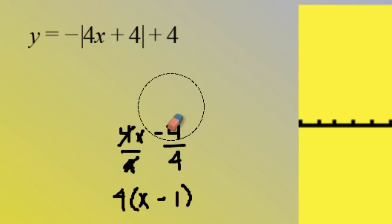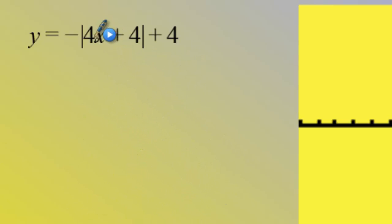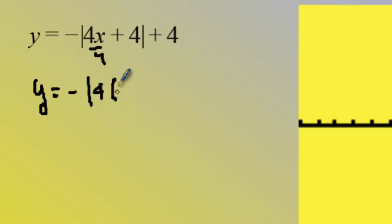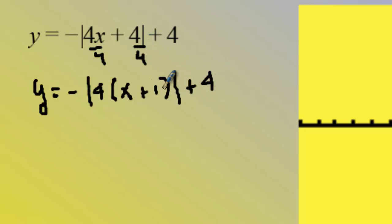Whenever you have a number next to the letter x inside the absolute value, you have to divide both terms by that number so that the number next to the x is a one before you determine what the horizontal shift is. So in this case I divide by four, leaving me x, and divide the other term by four to get one. Now that I have just a one next to the x, I can actually see the horizontal translation and still have the slope of the rays inside.